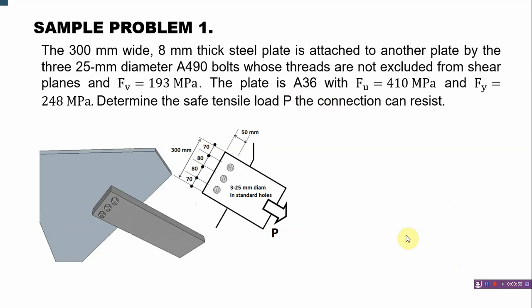First step is to list all the given. If we have a figure, we need to list it down: 8 mm thick plate, F_v = 193 MPa, and 410 MPa which is the F_u, and F_y = 248 MPa. We need to take note of these.